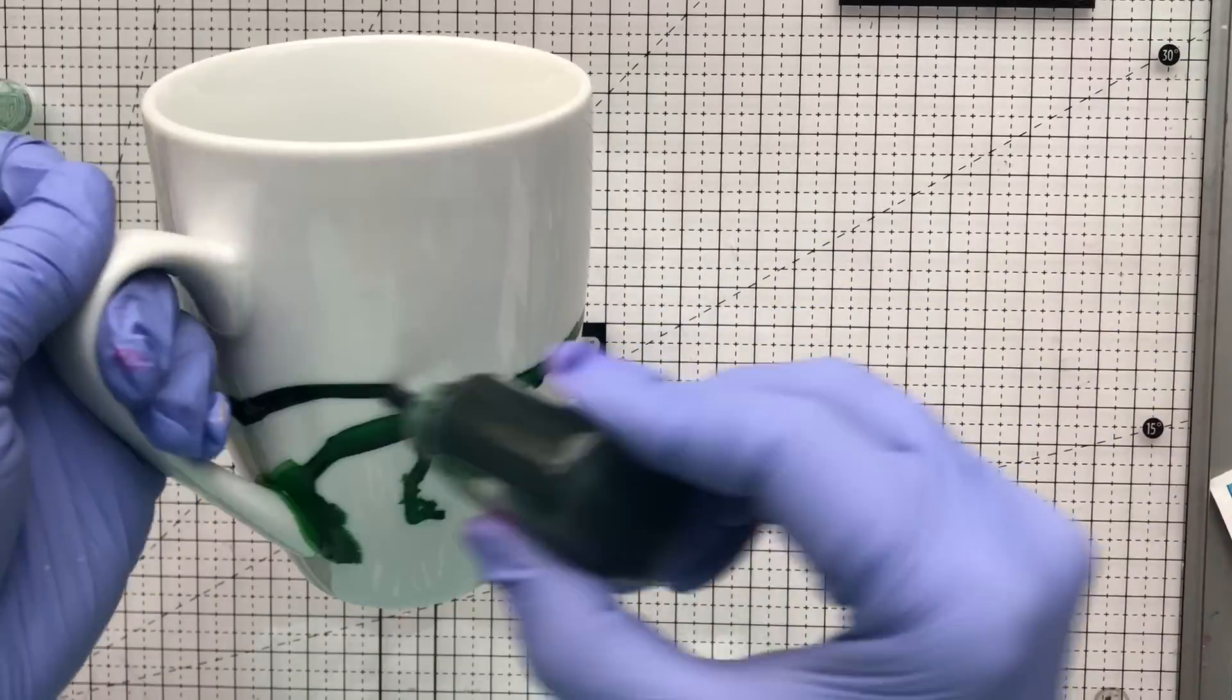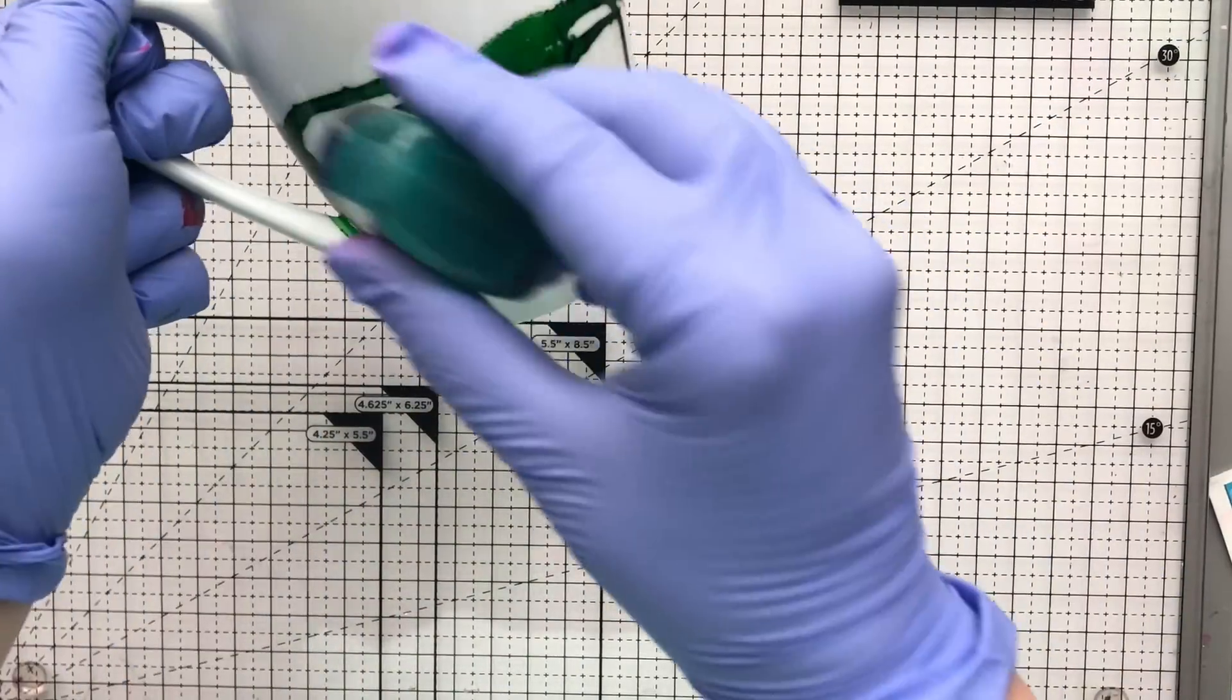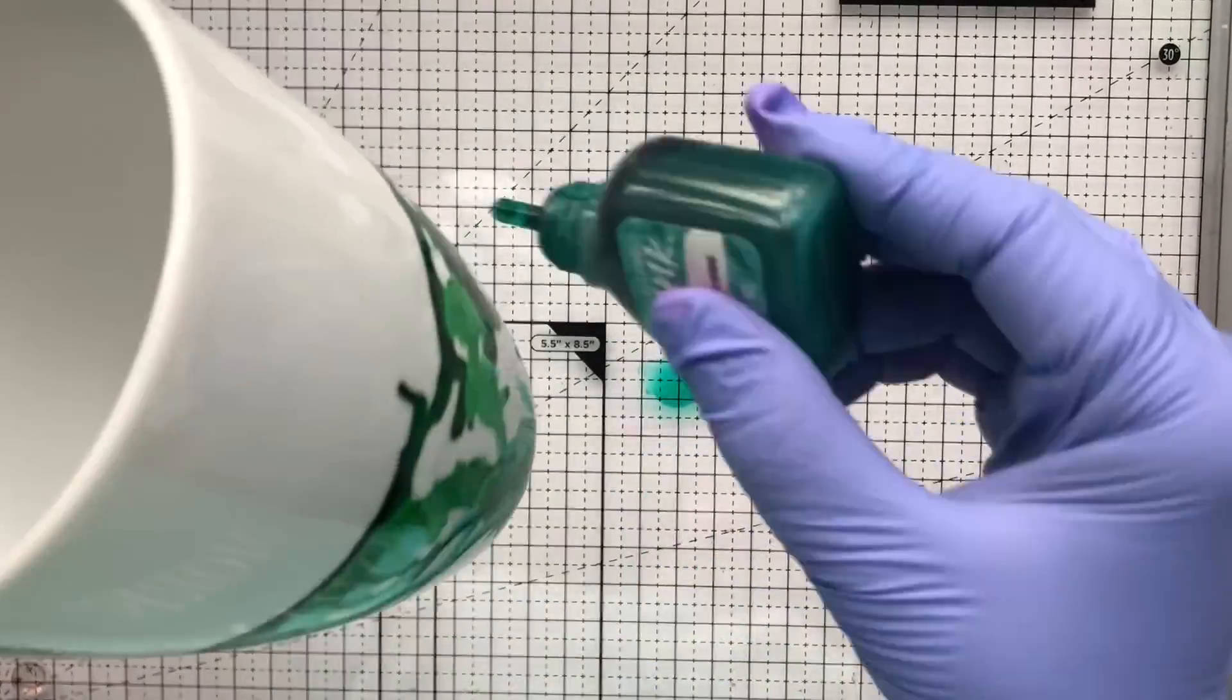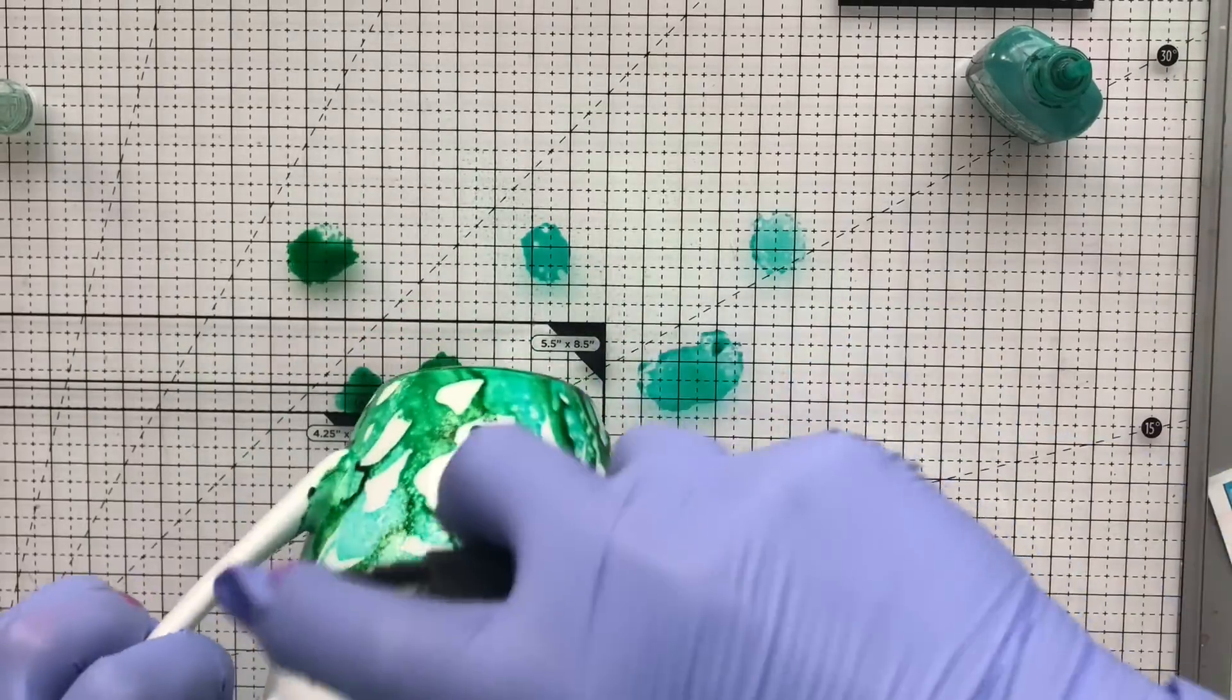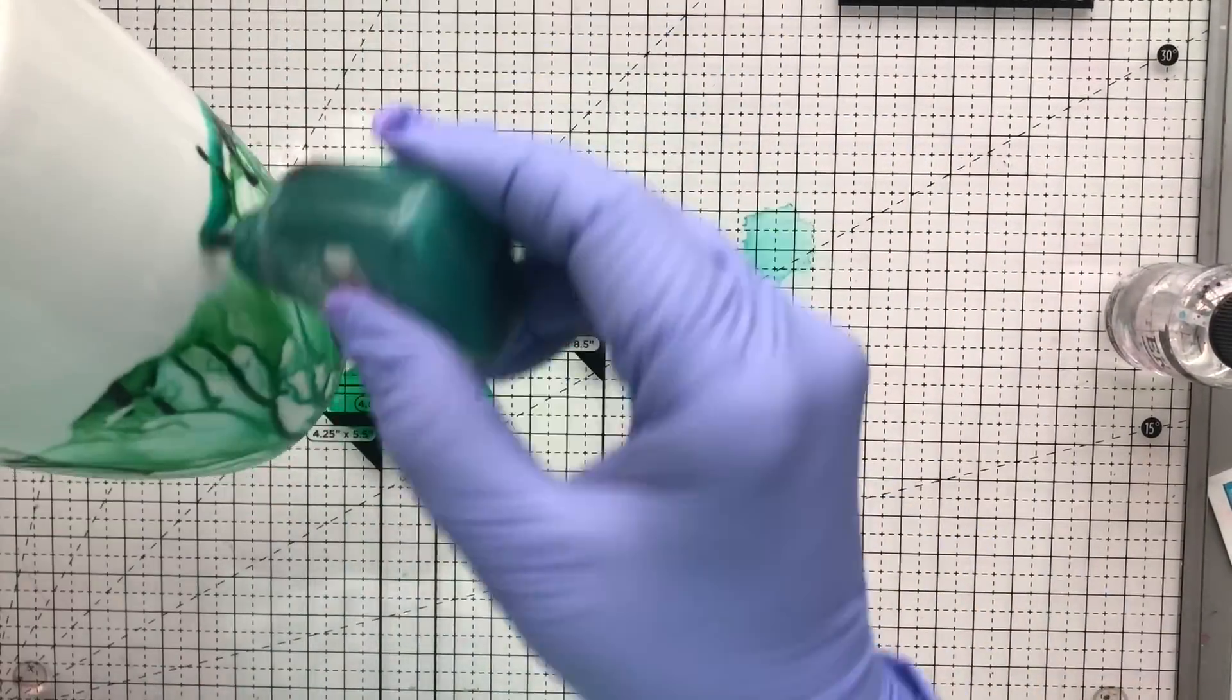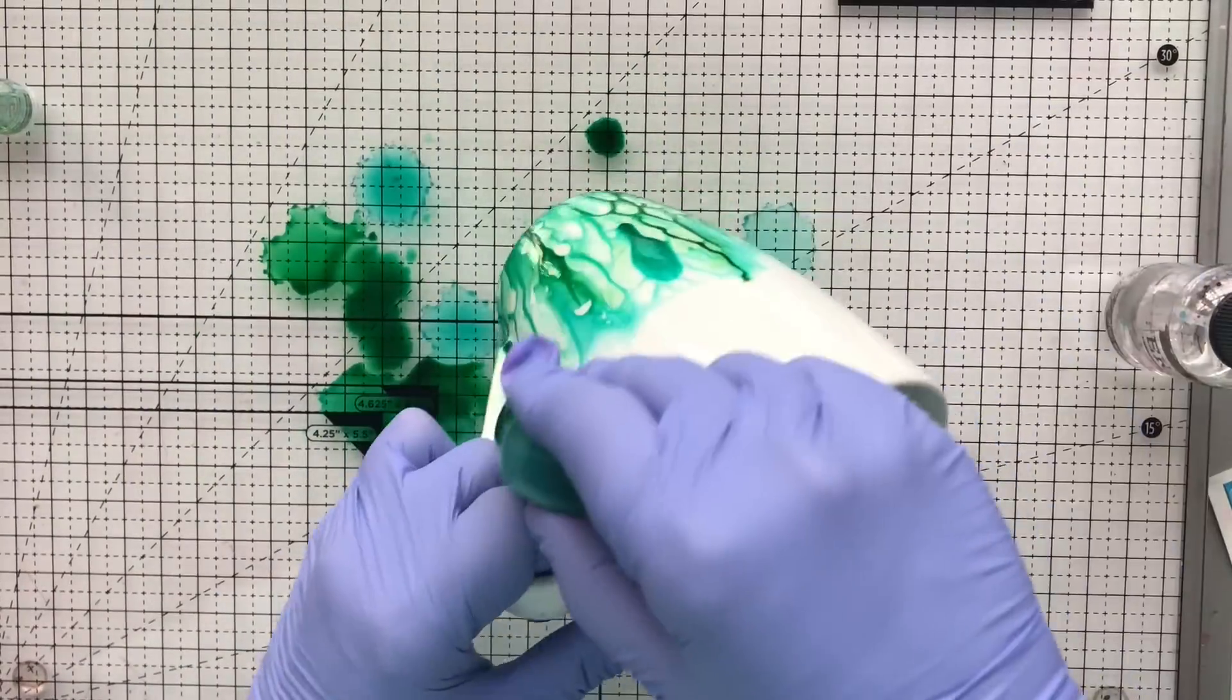All right, so I'm going to make another one here. This time I'm using a couple of shades of green. Again, all the colors I'm using are listed below. This color right here is a bluish green and this is what I actually used on the mug that I posted on Instagram that sparked this video request. Again, you can see that I'm spraying the alcohol, so that mister bottle has isopropyl alcohol from the grocery store.